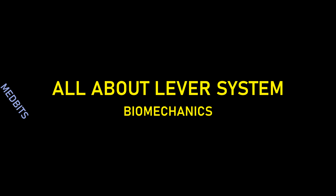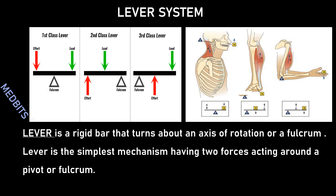Hi, hello guys, this is MedBitch, your exam savior, and today we are going to talk about lever system biomechanics. A lever is a rigid bar that turns about an axis of rotation or fulcrum. In other words, a lever is the simplest mechanism having two forces acting around a pivot or fulcrum.